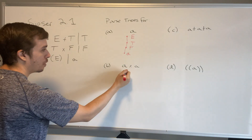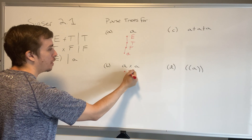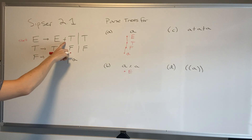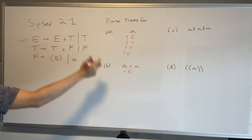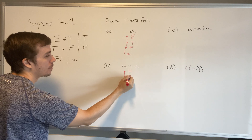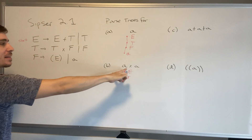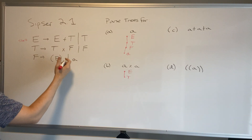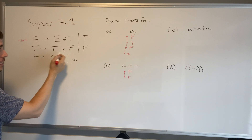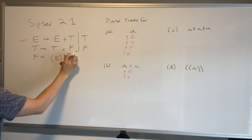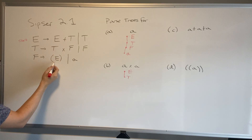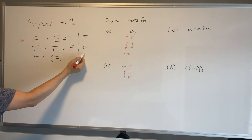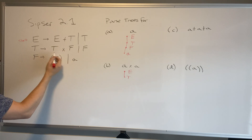Now let's do 'a×a'. Again we start with E at the top. We can't make a plus because there's no plus here, so we go to T. In T, we have the × here, so we will use the rule T→T×F instead of T→F. Because if we applied T→F, the only way to ever get back to the × would be through the F rule generating left and right parentheses, which we don't have. So we go the T→T×F route.